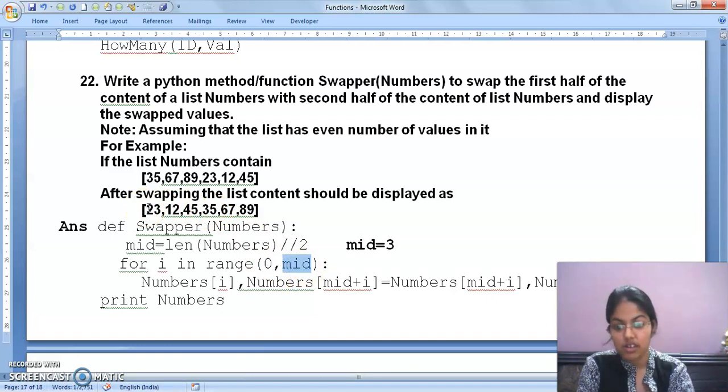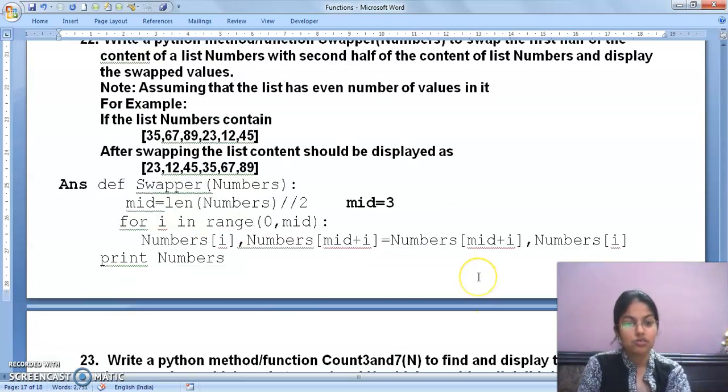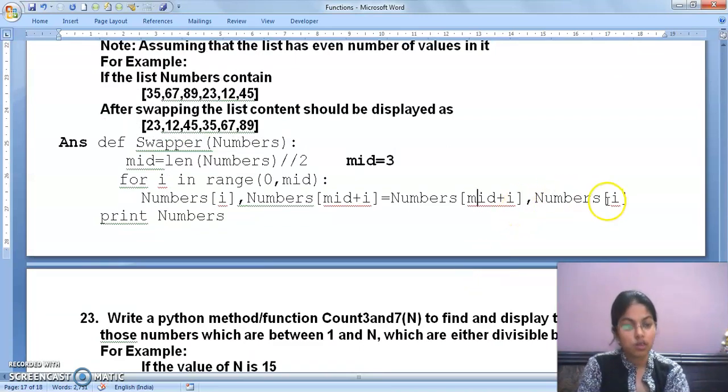That means if I write the index, zero, one, two, three like this. Mid is written, right? So the loop will run till where? Zero, one, two. Now what you have to do? Swap this 35 with 23. This will be your i value and that will be which one? i plus means mid plus i. This is your middle value in between. So mid plus i. Got it? So you will write here Numbers[i], comma mid i, mid plus i equals to Numbers[mid plus i], comma Numbers[i]. What will happen? Numbers i will get the value of mid plus i. And mid plus i will get the value of Numbers i. Got it?